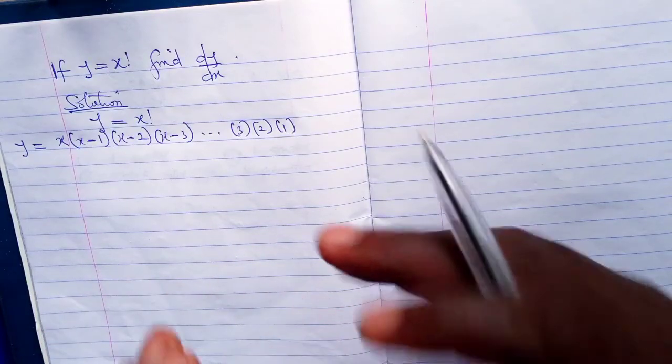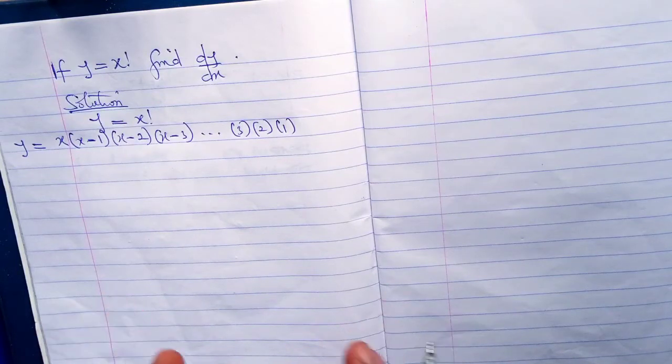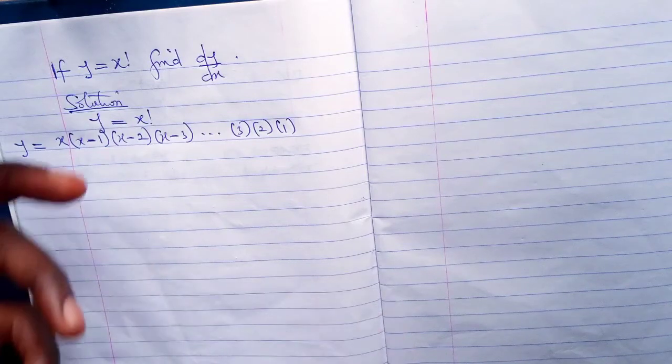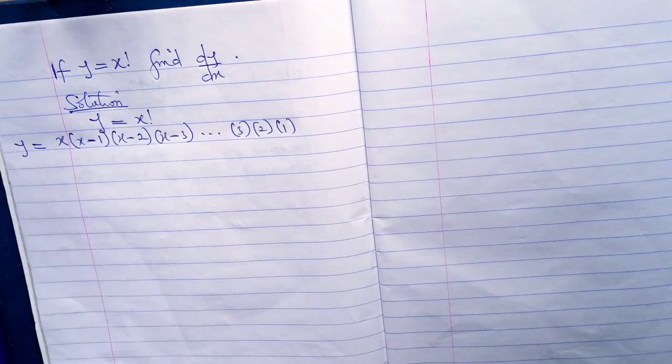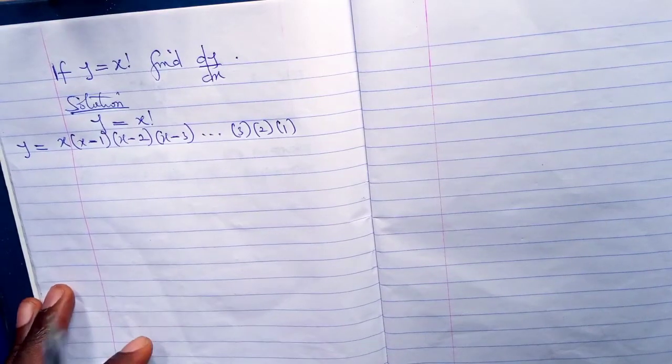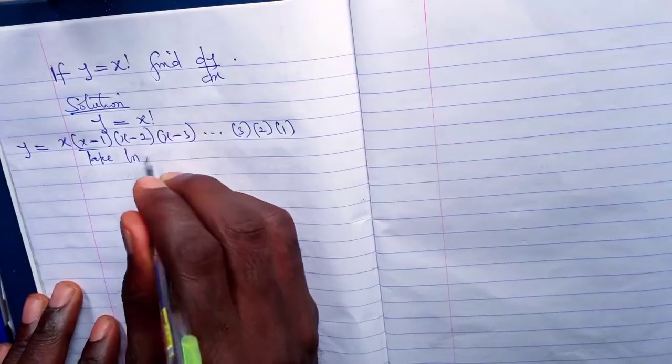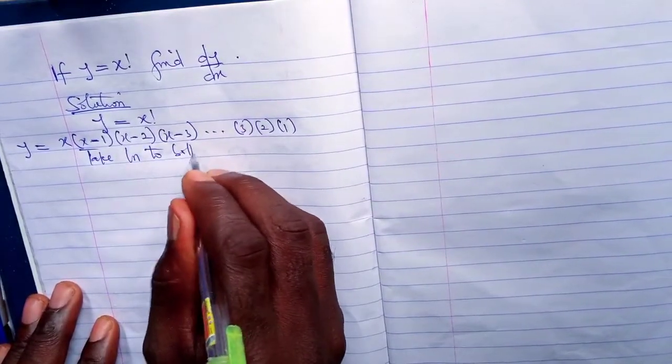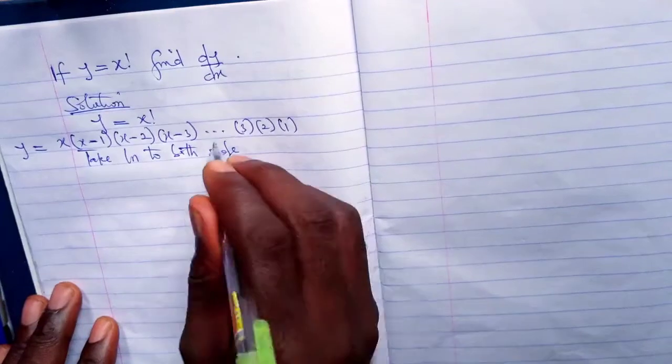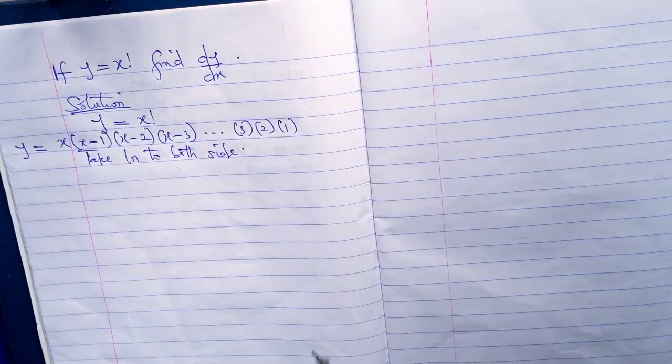Next, you will need to solve this. This is a product rule, but it's very difficult for you to use direct product rule. What you will do now is take ln to both sides. Remember, ln is a natural logarithm.